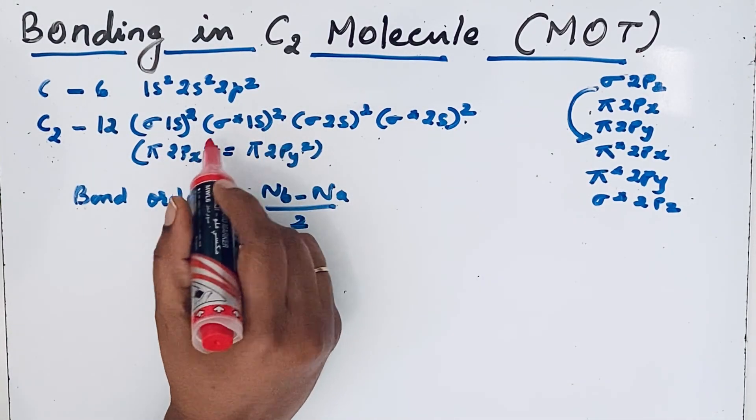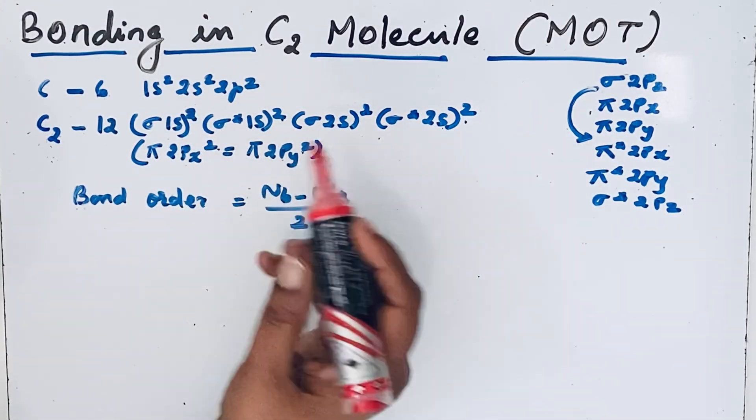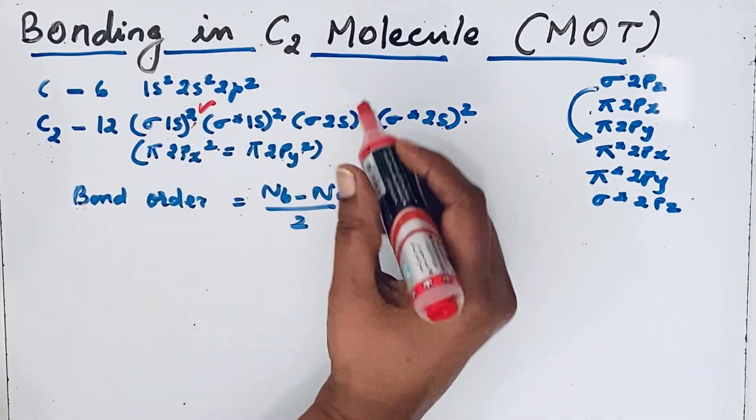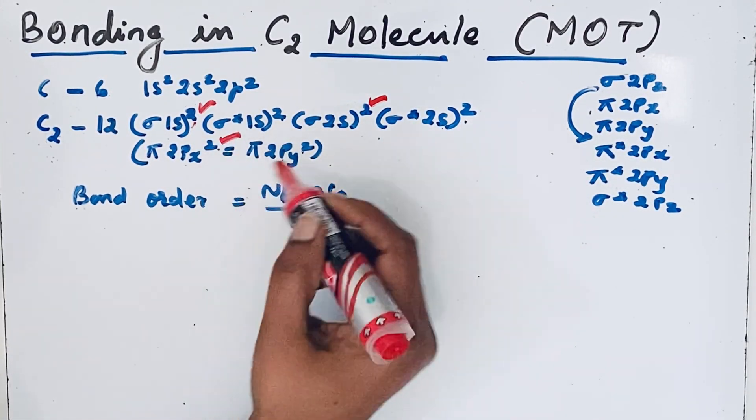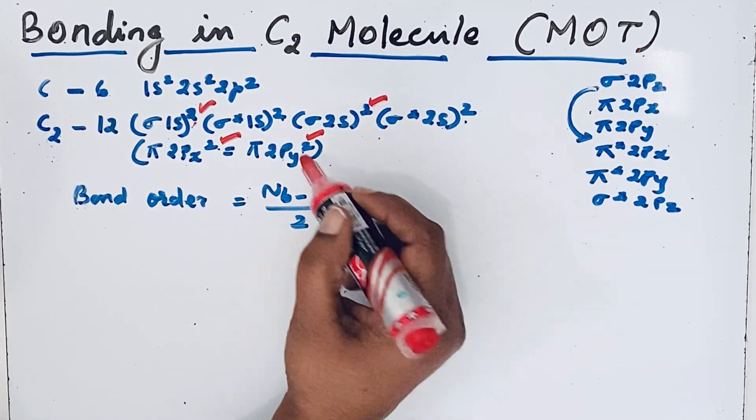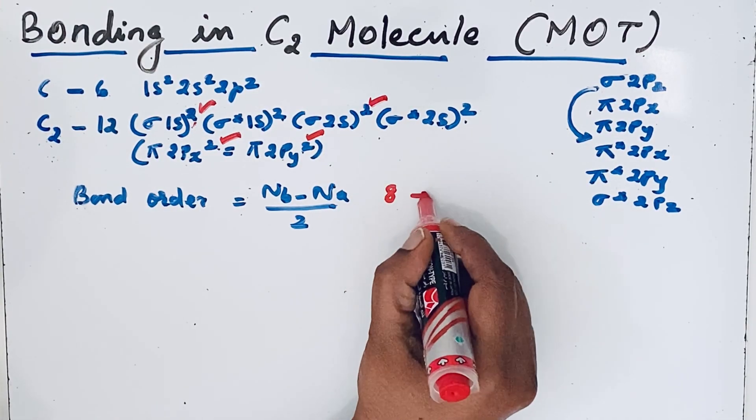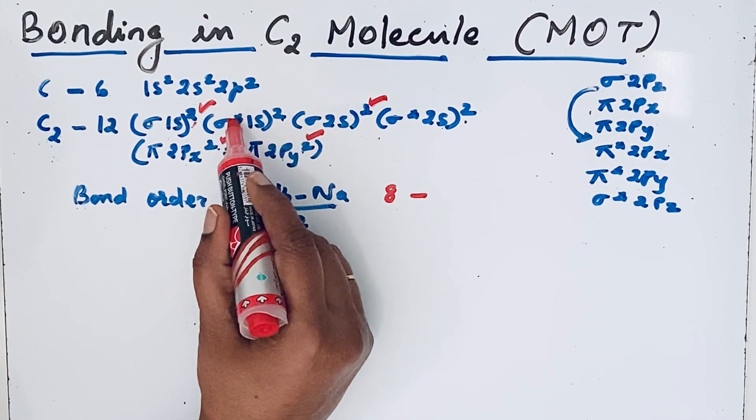Find the bonding electrons—see the number of electrons present in the sigma bond. Here 2, then here 2 makes 4, then after that 6, then this is also 2 makes 8. These are bonding electrons.